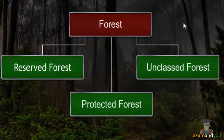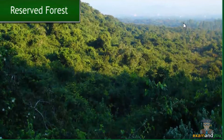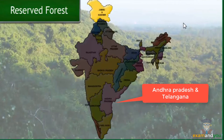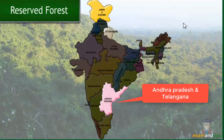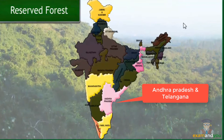Over 50% of the forests in India have been declared reserved forests, which are of primary importance from the conservation point of view. The states of Jammu and Kashmir, Andhra Pradesh, Uttarakhand, Kerala, Tamil Nadu, West Bengal, and Maharashtra have a large percentage of their forests classified as reserved forests.